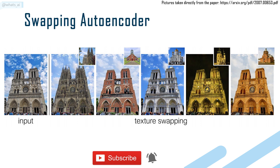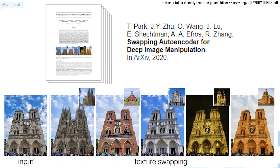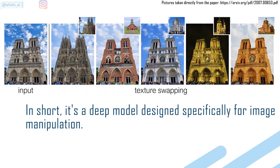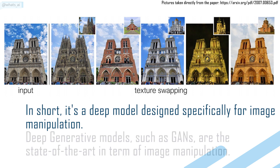Researchers at Berkeley University recently introduced a new technique for existing image manipulation in a paper called Swapping Autoencoder for Deep Image Manipulation, where they proposed the swapping autoencoder. In short, it's a deep model designed specifically for image manipulation.